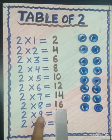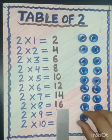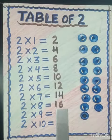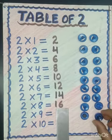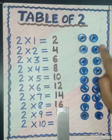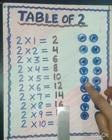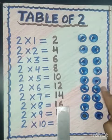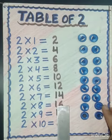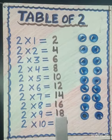Next is two nines are — again we will add two. So let's count: 1, 2, 3, 4, 5, 6, 7, 8, 9, 10, 11, 12, 13, 14, 15, 16, 17, 18. So two nines are 18.